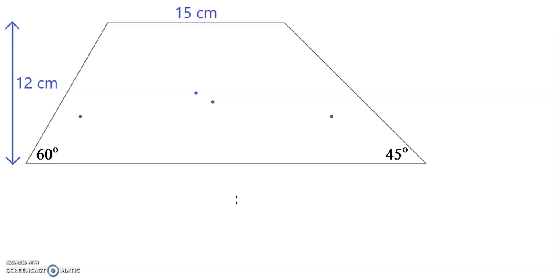First, drop a perpendicular down from this point to the base and form a right angle triangle there, and similarly a perpendicular down from this point to the base and form a right angle triangle here as well. So now this trapezium has been divided up into three sections: a right angle triangle, a rectangle, and another right angle triangle.